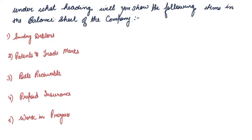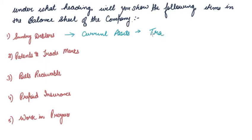Under what heading will you show the following items in the balance sheet of the company? Sundry debtors come under the heading current assets, and trade receivables is the subheading.